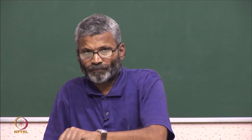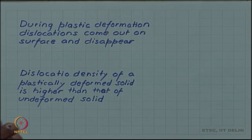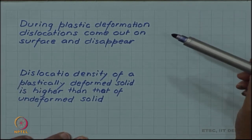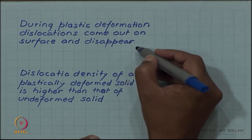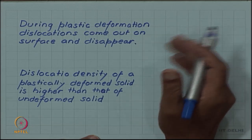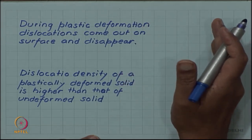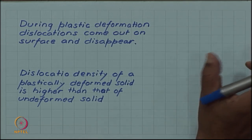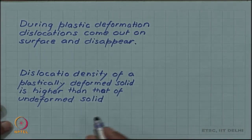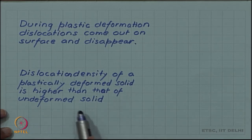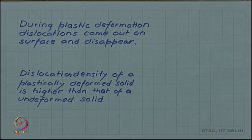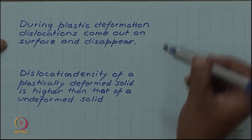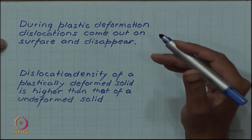In the last video, we saw a sort of contradiction regarding the behavior of dislocation during plastic deformation. During plastic deformation, dislocations come out on the surface and disappear — when a single dislocation sweeps the entire slip plane and comes out of the crystal, it creates a step of Burgers vector b. Another fact we saw is that dislocation density of a plastically deformed solid is higher than that of an undeformed solid. On the face of it, these are two contradictory statements, because if dislocations are coming out on the surface and disappearing, the dislocation density should come down.